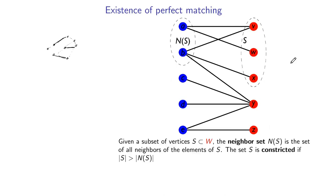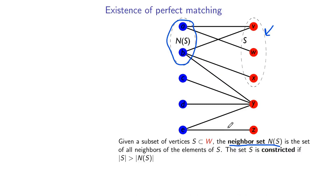Let's introduce some notation. If S is a subset of vertices, we define the neighbor set N(S) as the set of all neighbors of elements of S — all vertices somehow connected to something in S. This set was constricted because the neighbor set of S had cardinality two while S itself had cardinality three. Because of that, we say this is a constricted set and therefore there's no matching. The neighbor set notation is going to come up all the time in this course.